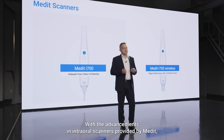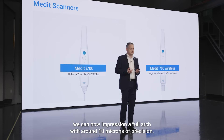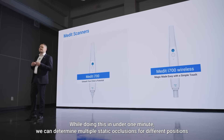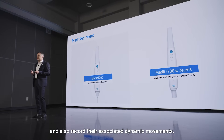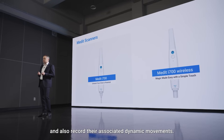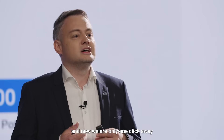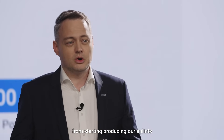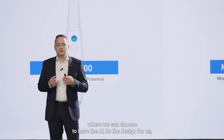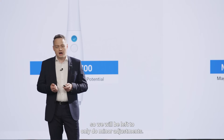With the advancements in intraoral scanners provided by Medit, we can now impression a full arch with around 10 microns of precision. While doing this in under one minute, we can determine multiple static occlusions for different positions and also record their associated dynamic movements. Post-processing is extremely fast and now we are only one click away from starting producing our splints, where we can choose to have the AI do the design for us, so we will be left to only do minor adjustments.